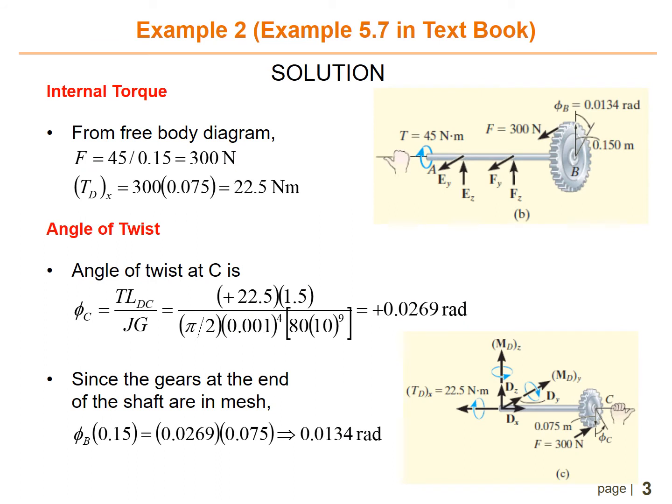Each shaft has a diameter of 20 millimeter. Take G to be 80 gigapascal. So what you do first is you need to find the internal torque from the free body diagram, and then you need to find F.